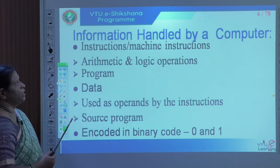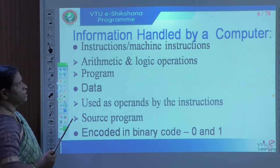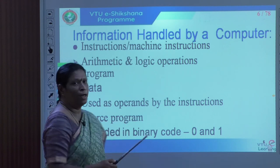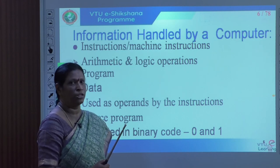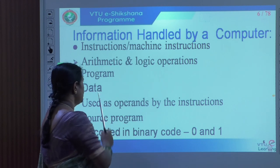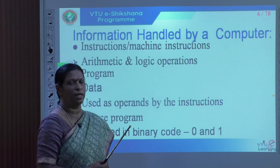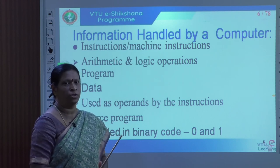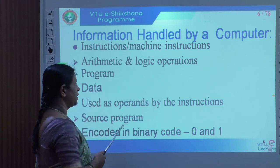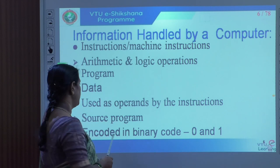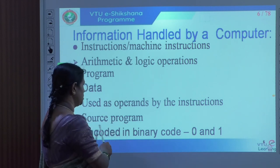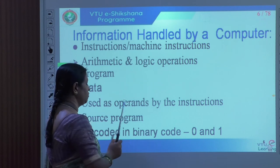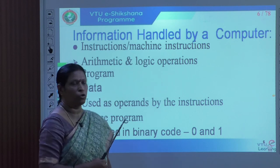Before detailing each unit, let us understand what information a computer handles. A computer handles machine instructions and data. Instructions can be data transfer instructions, mathematical or logical instructions — any type of instruction that together forms a program. Data represents the operands of the instructions, which can be part of a source program and is encoded in binary form as zeros and ones.